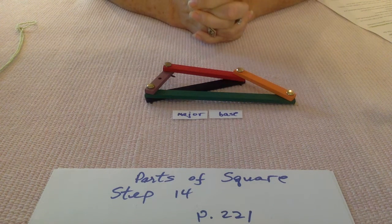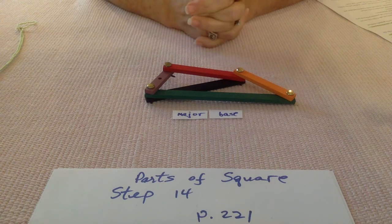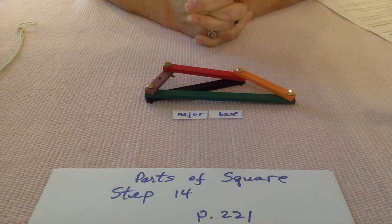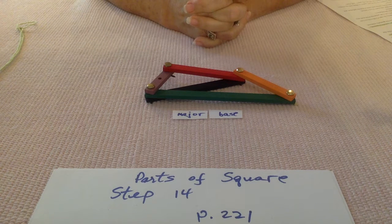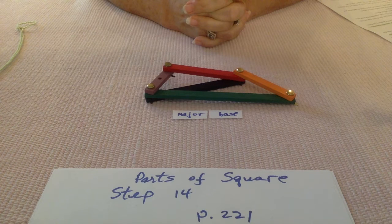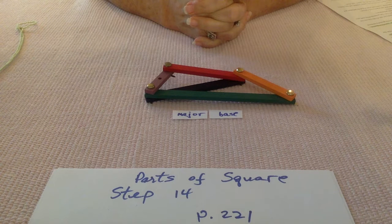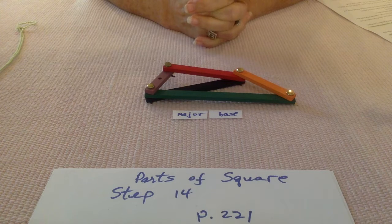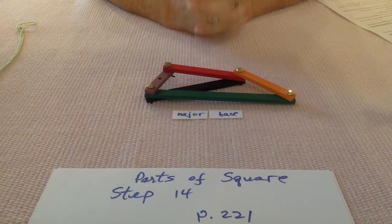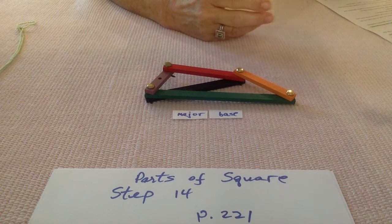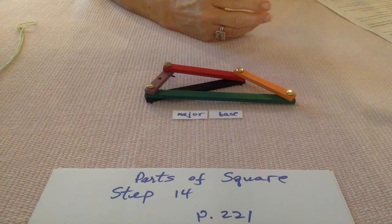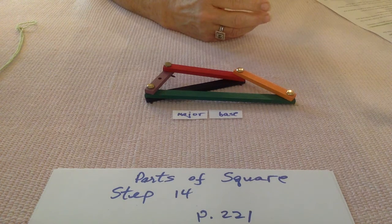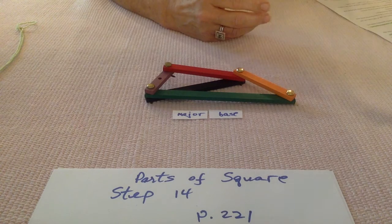Okay, we're moving on to parts of a square, but I am starting on step 14 on page 221. The first page, in other words page 220 of this lesson, I consider to be part of the other lessons that I told you that you would need to do with the nomenclature cards, the parts of all the different quadrilaterals.